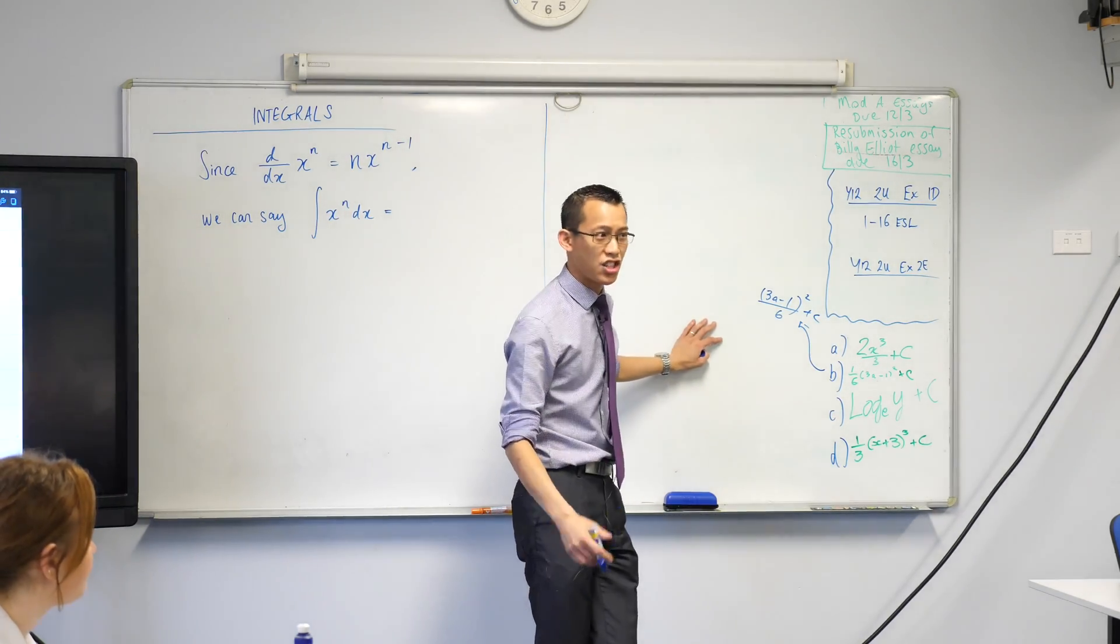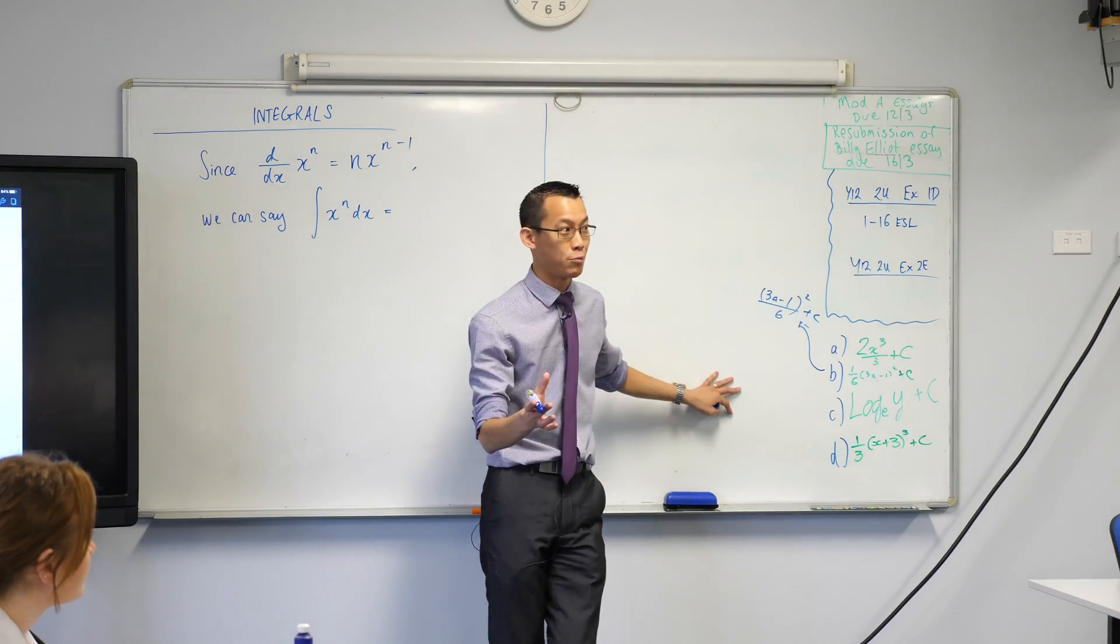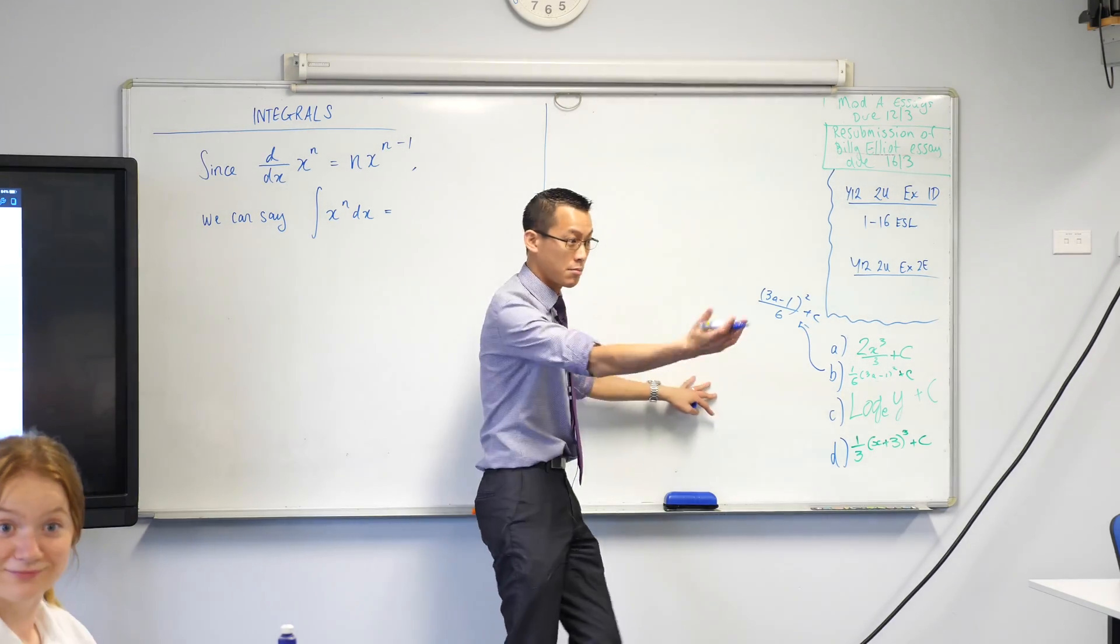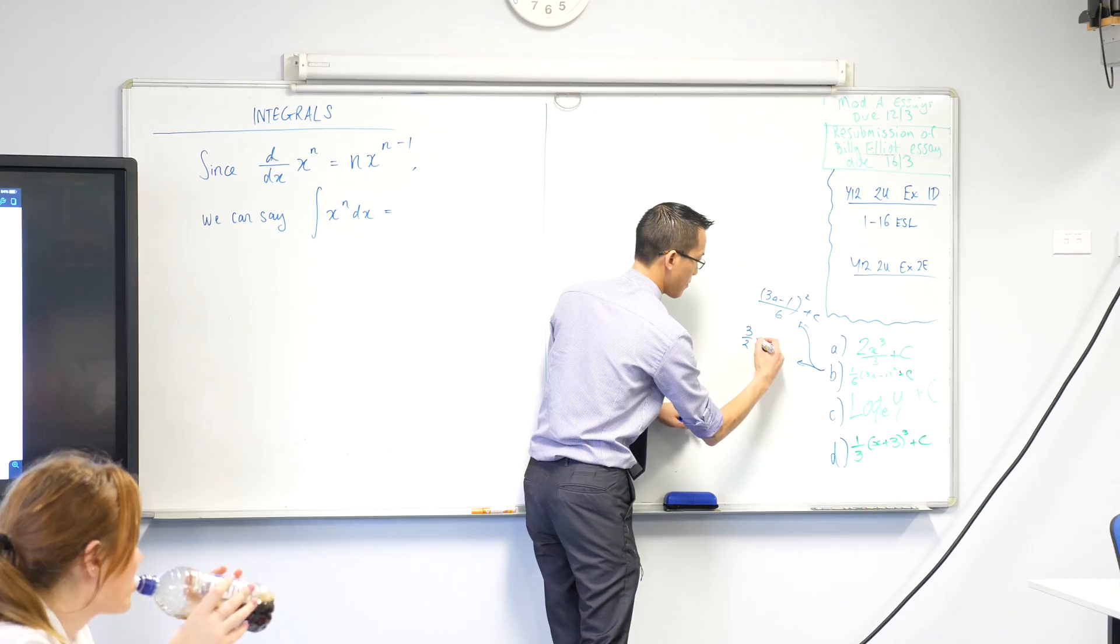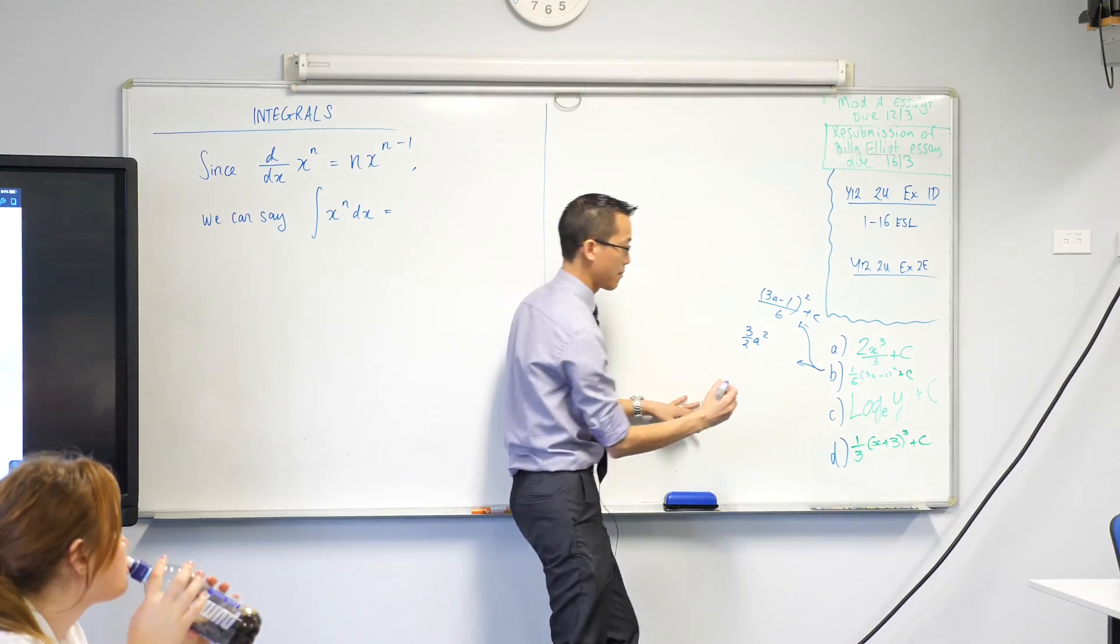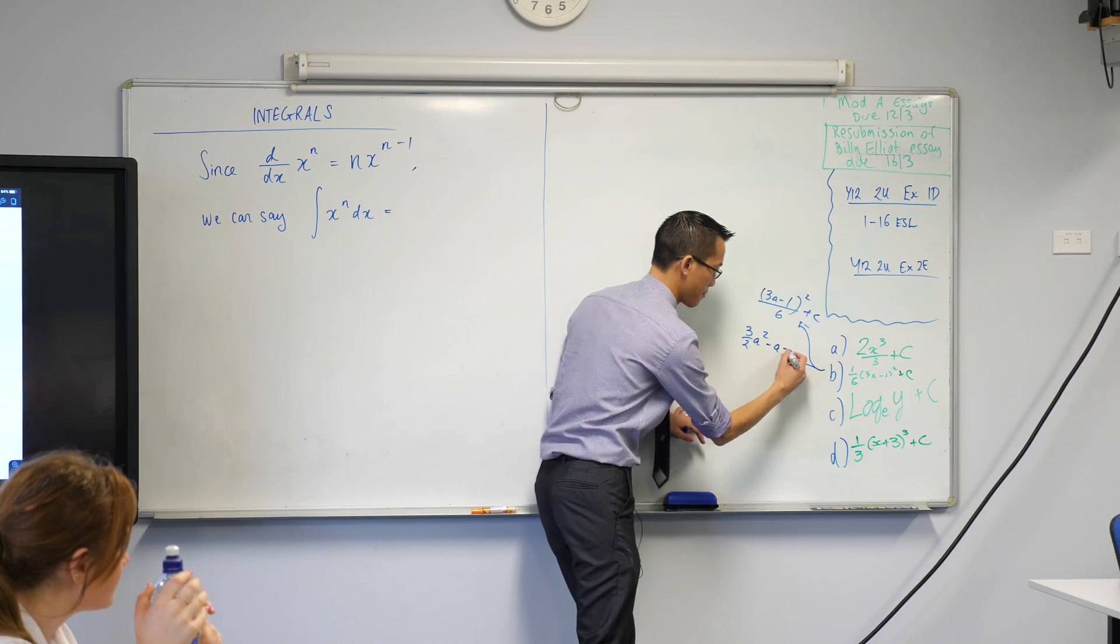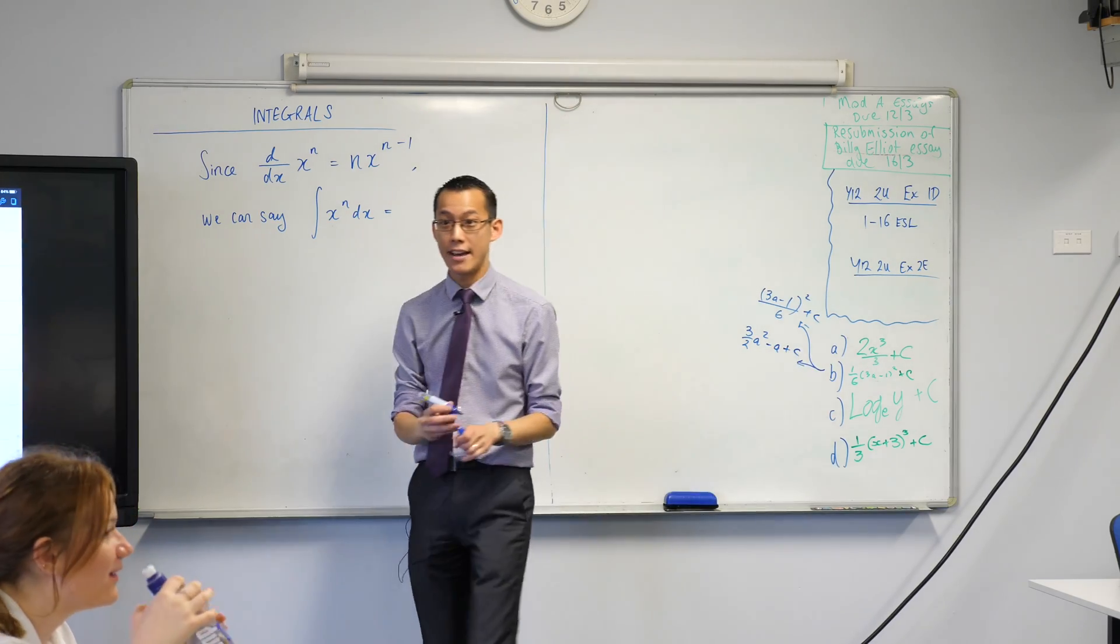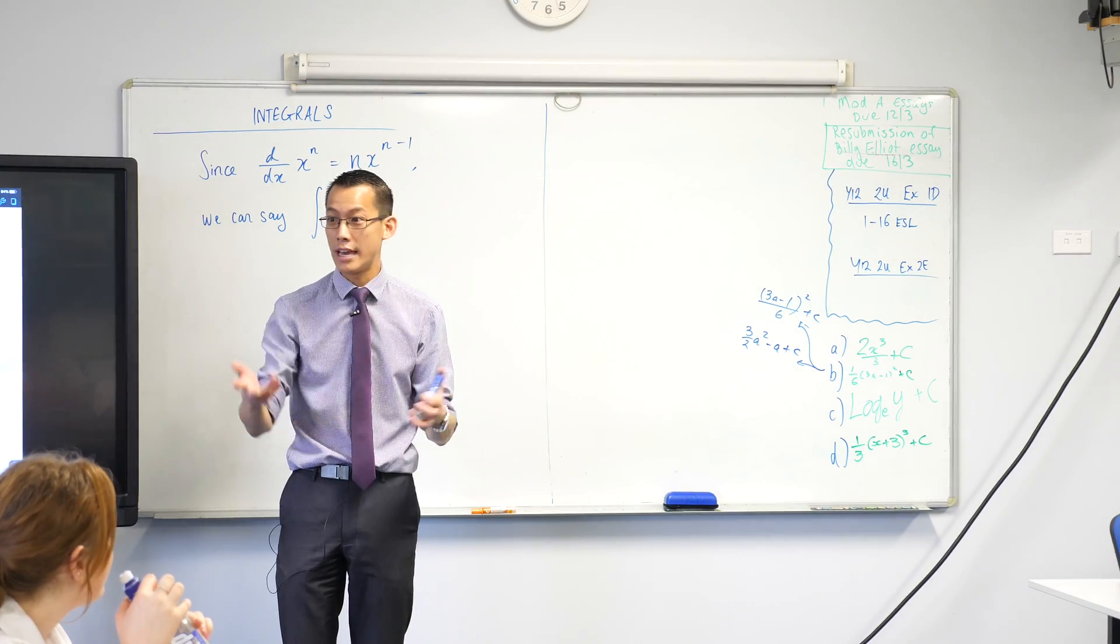It's the same, yeah? We've just written the 6 a different spot. Very few people put up their hand for that one. Who wrote their answer another way still? 3 over 2 times a squared minus 1a plus c. I'm just going to write a, is that okay? Plus c. Who wrote their answer like that? A few more hands. This seemed like the most common one.